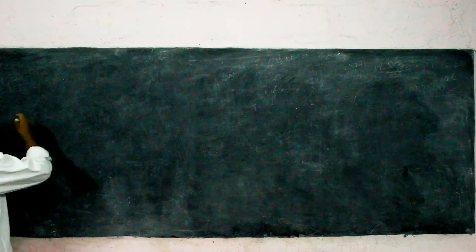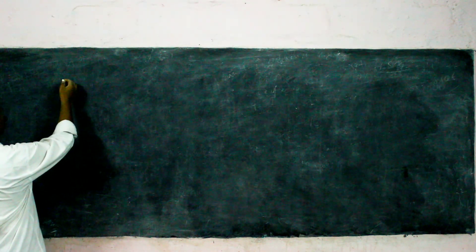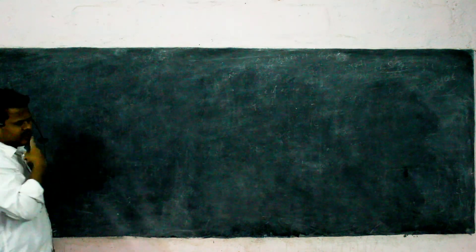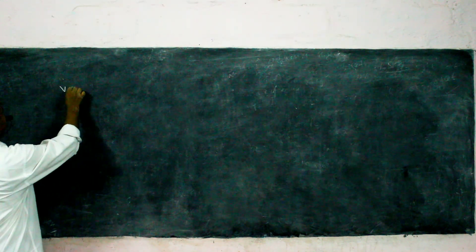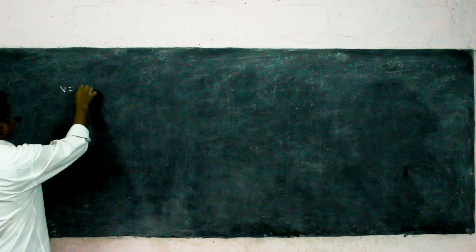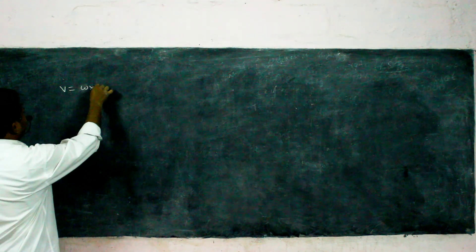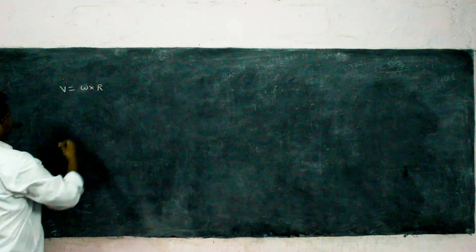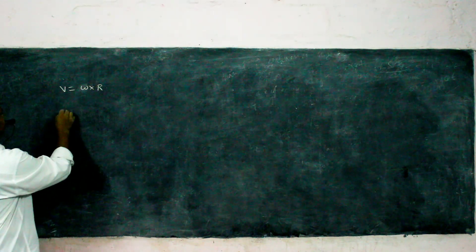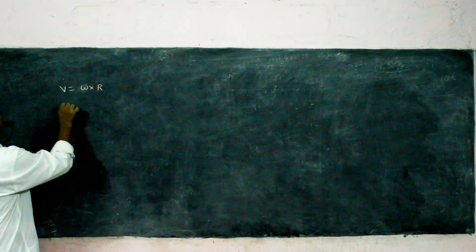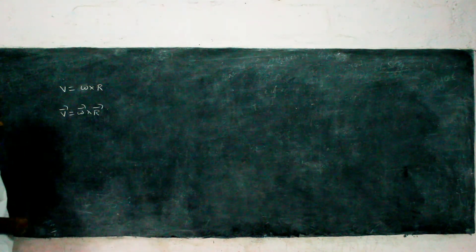Yesterday we wrote a relation between linear velocity and angular velocity. The relation is V equals omega into R. In vector form, we write V = ω × R.